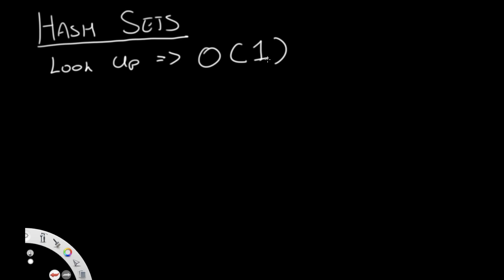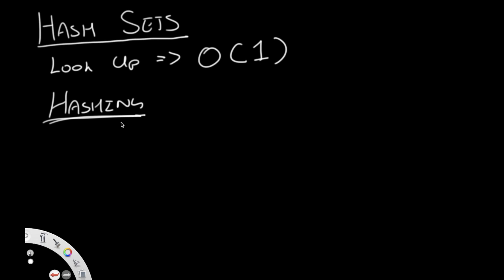How does it actually have such a fast lookup time? It's important to understand this in order to create our hash set. It uses something called hashing. All hashing is, think of it as some sort of function which takes in a value and gives you a value back.